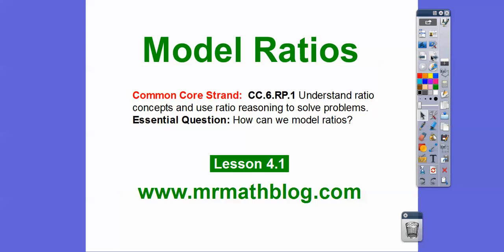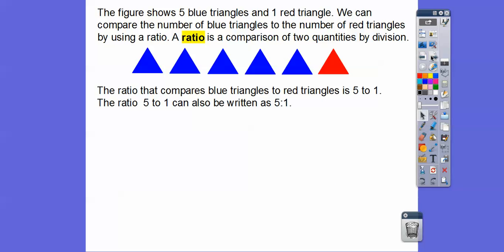Here's our common core strand, and our question is: how can we model ratios? We're going to use triangles — different colored triangles — but we can also use squares and circles, or just different colored circles. This figure shows five blue triangles and one red triangle. We can compare the number of blue triangles to the number of red triangles by using what's called a ratio. A ratio is a comparison of two different quantities by division.